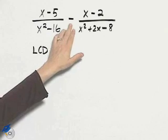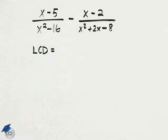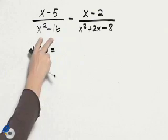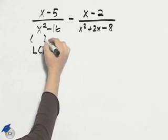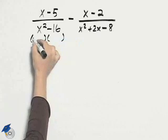The indicated operation in this problem is subtraction, so we know that we need to have a common denominator. Clearly we don't have one, so the easiest way to find a common denominator is to factor each of the given denominators.